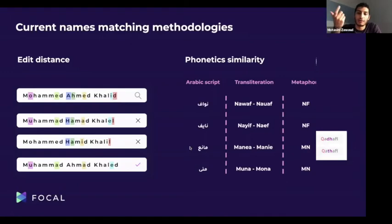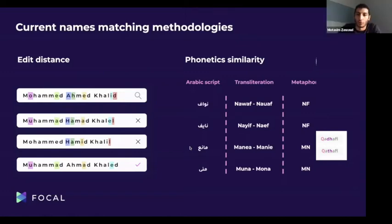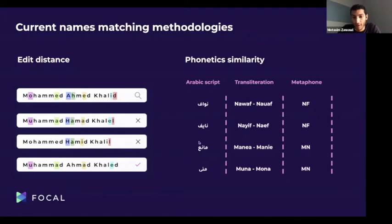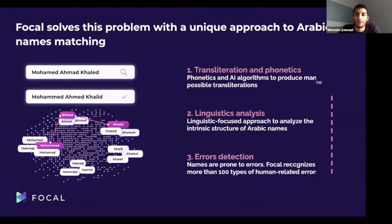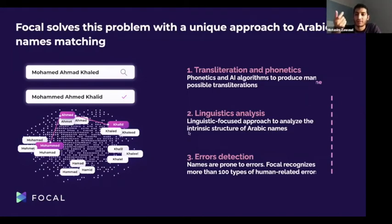The second technology is phonetic similarity, where AI represents a name as a phonetic code. For example, Nawaf and Naif — which are different names — are both encoded as NF, causing them to match incorrectly. Similarly, Mana and Muna share the same phonetic code. At Focal, we use a combination of these technologies and also focus on Arabic linguistics. We built a transliteration engine based on artificial intelligence that takes an Arabic name and identifies all possible variations.